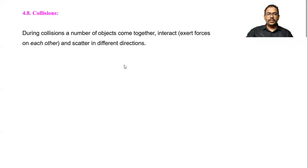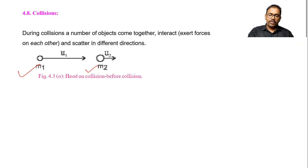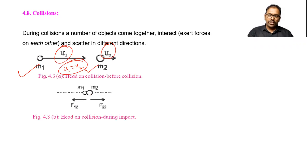Now, here we consider during collision, a number of objects come together, interact and scatter in different directions. We consider one example. So you can see here is the object of mass M1 and M2 moving with initial velocity U1 and U2 along same line. So I can consider here U1 is greater than U2. Then the collision occurs.